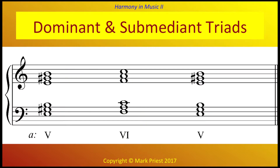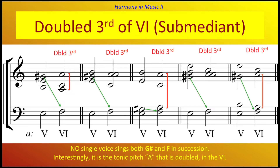Not good. We'll start with the connection between the dominant and submediant triad pair in minor — that's the 5th and 6th chords, two major triads, a semitone apart. The way to avoid traversing the Augmented Second Interval in the same voice is simple: we double the 3rd of the 6th chord, the submediant triad, instead of its root. It is in this way that the 7th and 6th scale degrees — G-sharp and F — are not sung melodically.